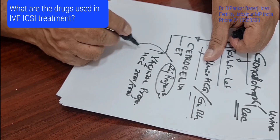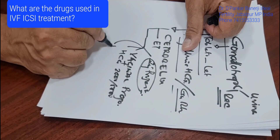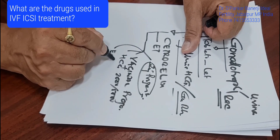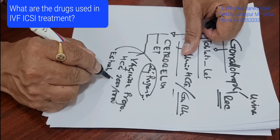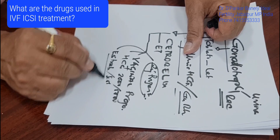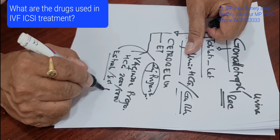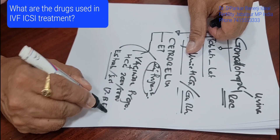Along with these, we use some estrogen — Estradiol valerate or Estradiol — but it is basically 17-beta Estradiol.